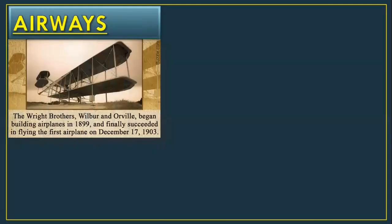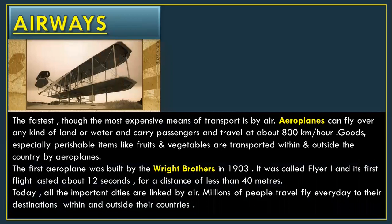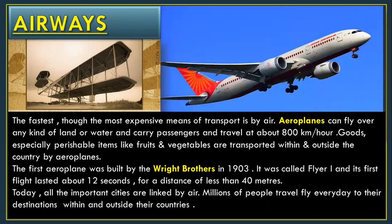Airways. The fastest, though most expensive, means of transport is by air. Airways can fly over any kind of land or water like deserts, mountains and vast oceans. They carry passengers, travel at about 800 km per hour.